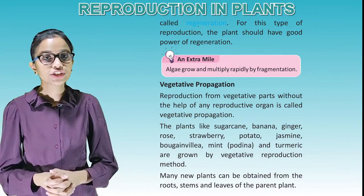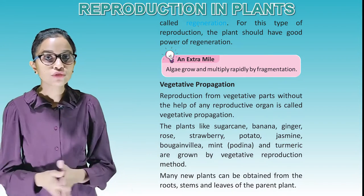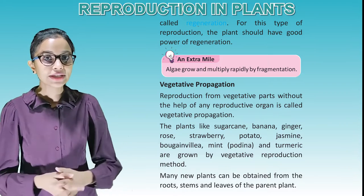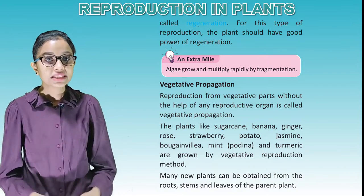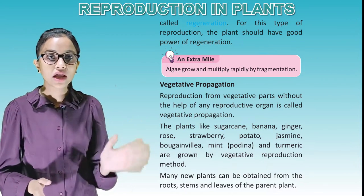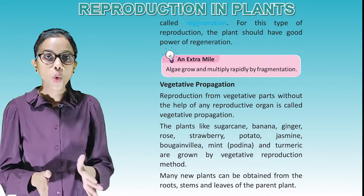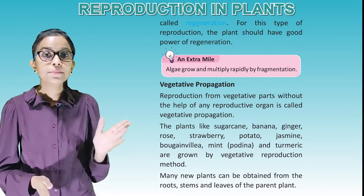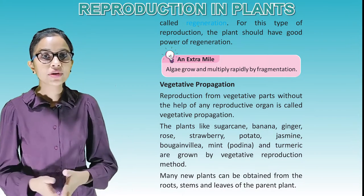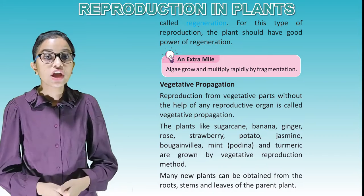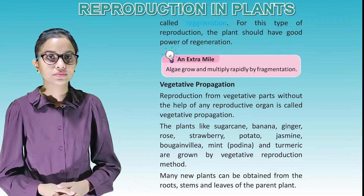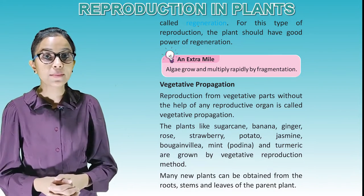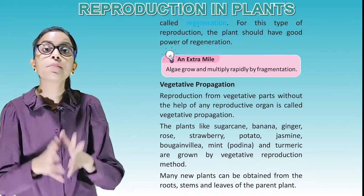Vegetative propagation: Reproduction from vegetative parts without the help of any reproductive organ is called vegetative propagation. Plants like sugarcane, banana, ginger, rose, strawberry, potato, jasmine, bougainvillea, mint, and turmeric are grown by the vegetative reproduction method. Many new plants can be obtained from the root, stem and leaves of the parent plant.